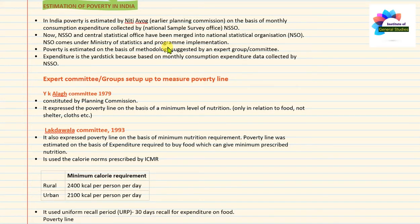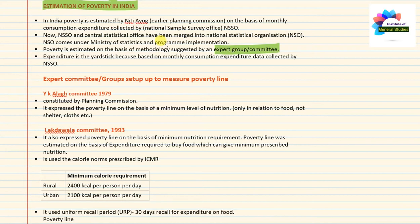This information may be asked in prelims. Poverty is estimated on the basis of the methodology suggested by expert groups or committees. Various expert groups have been constituted from time to time, and they have given different methods to measure poverty. These methods were used before the Planning Commission.